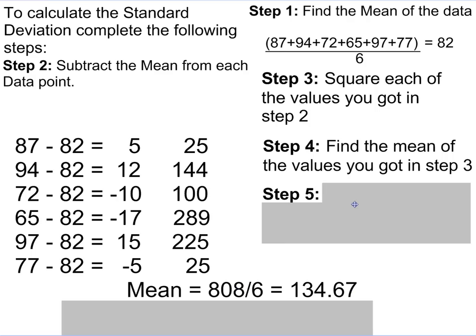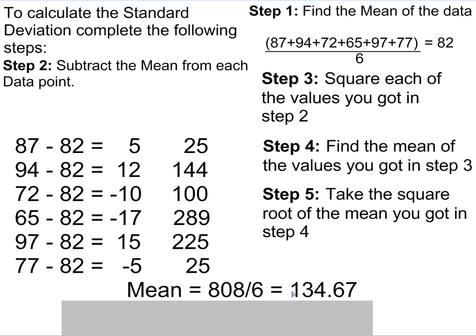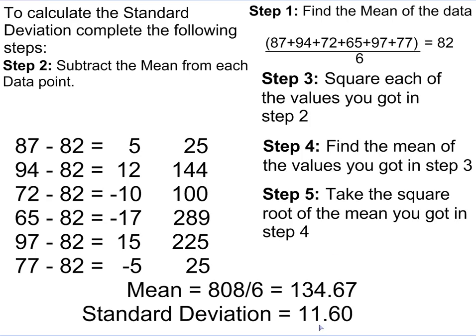The final step to finding standard deviation is to take the square root of that mean we just got. So my standard deviation in this case is 11.60. And that is a review of how to find standard deviation.